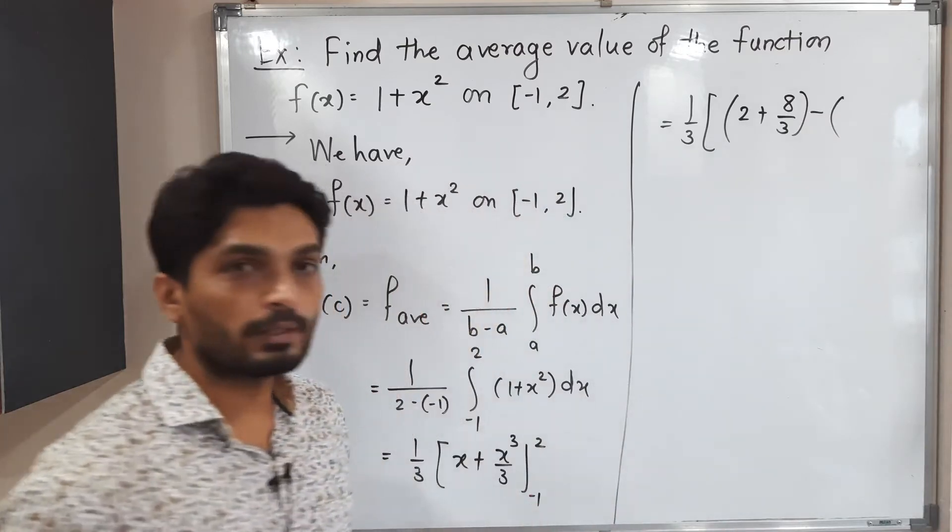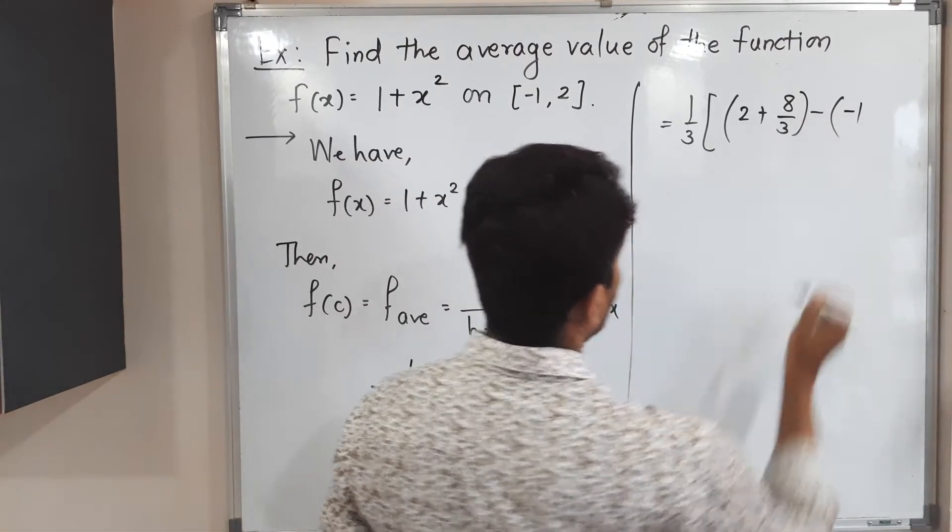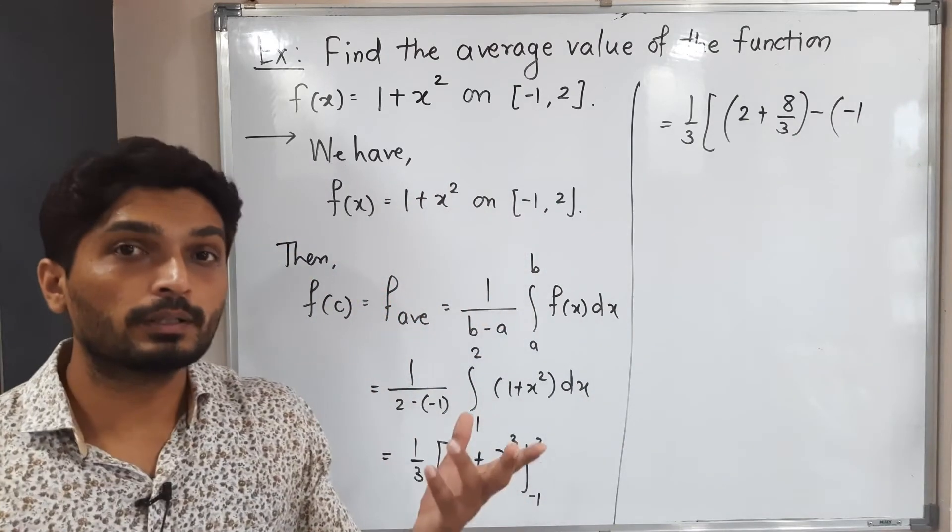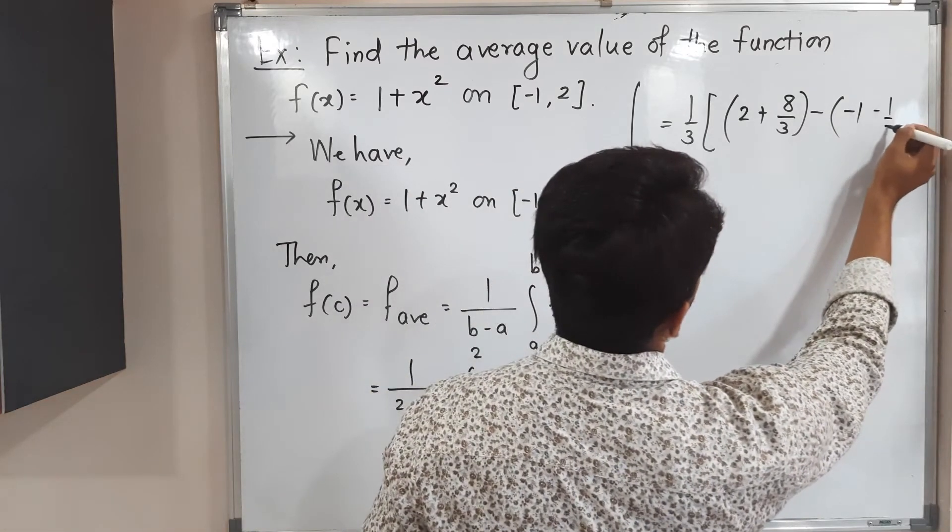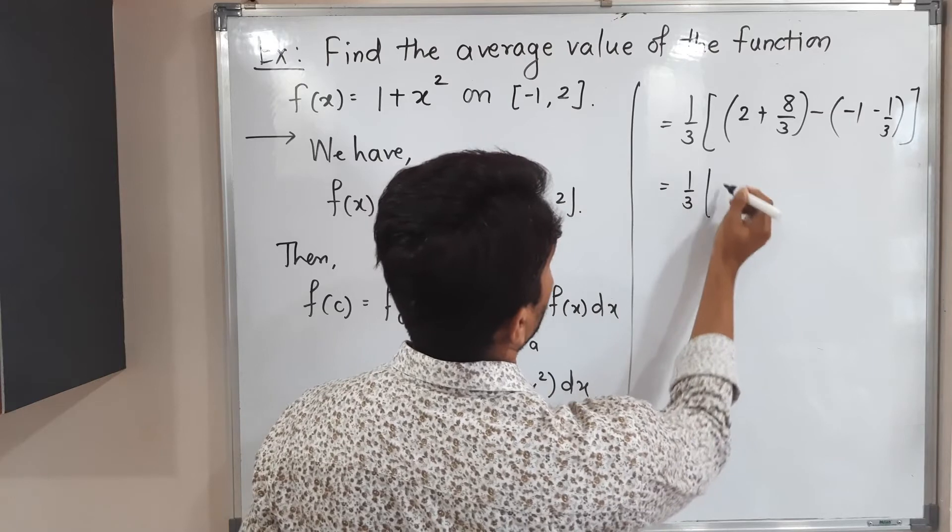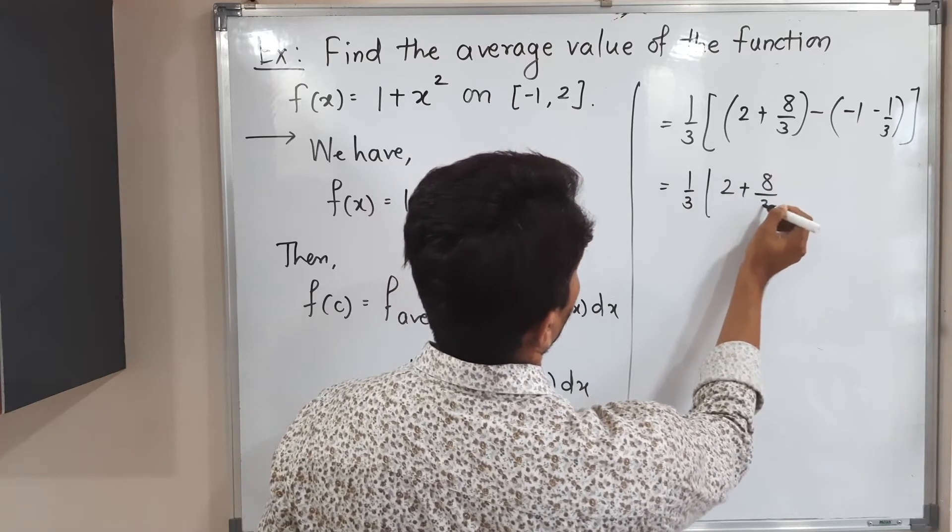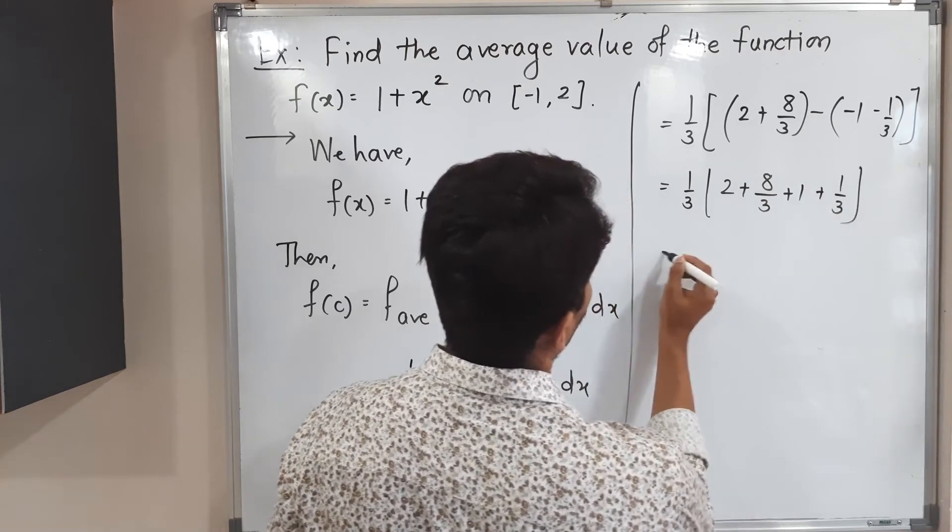Minus. Now I will put lower limit minus 1. If I put minus 1 we will have minus 1 here and minus 1 cube, minus minus again. So we'll have minus 1 by 3.